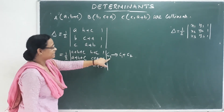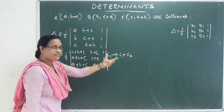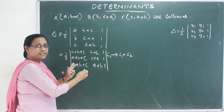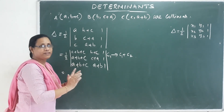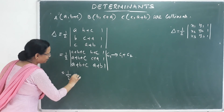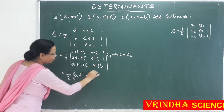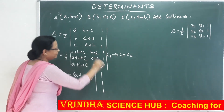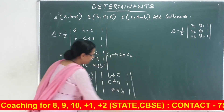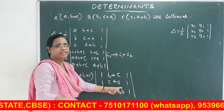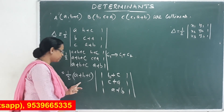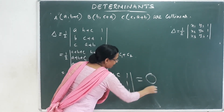Then we call it C1 tends to C1 plus C2. We add C2 to C1, then we take out a factor. After the operation: B+C, C+A, A+B with 1, 1, 1. That means the two columns C1 and C3 are identical — repeated columns. So the value of this determinant is equal to 0. Therefore the whole value is 0.